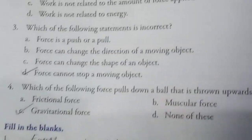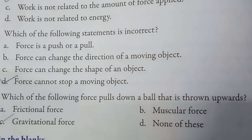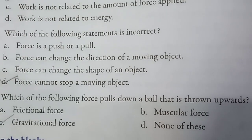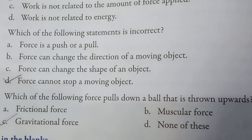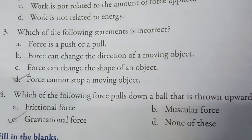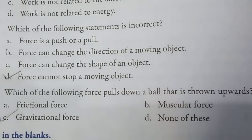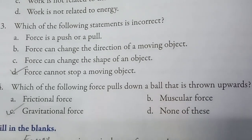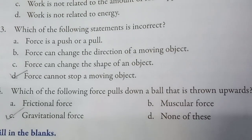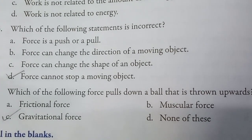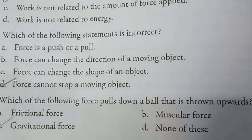Question number four: Which of the following forces pulls down a ball that is thrown upwards? Options are: a) frictional force, b) muscular force, c) gravitational force, and d) none of these. The answer is gravitational force, as gravitational force pulls down any object that is thrown upwards.